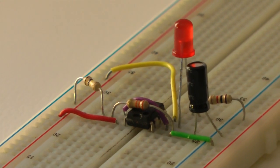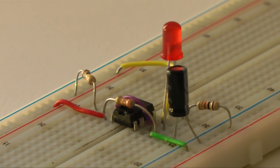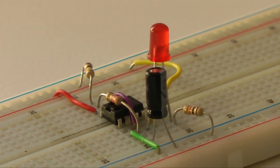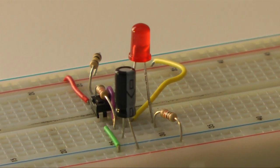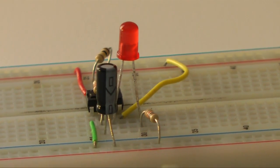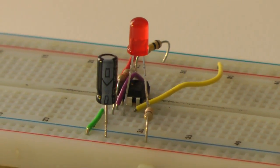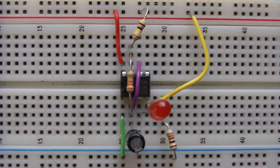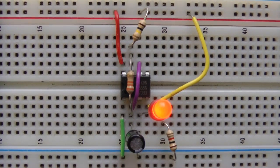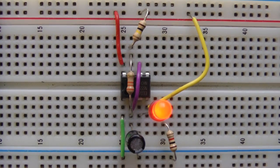The 555 is versatile. With the addition of some simple components, it can be configured to do everything from controlling a robot to making music. As an introduction to this device, I'll demonstrate how to create a circuit designed to flash an LED, similar to the circuit used to control turn signals and four-way flashers on a car.